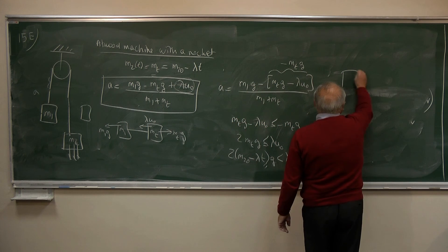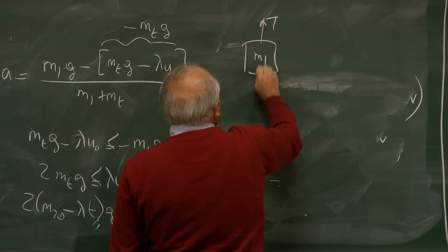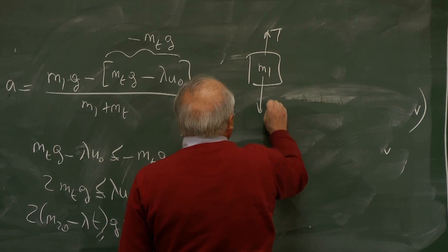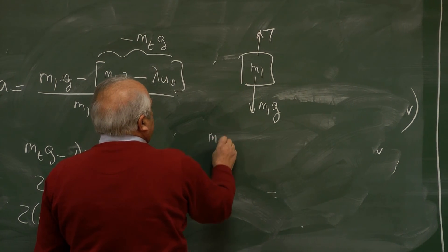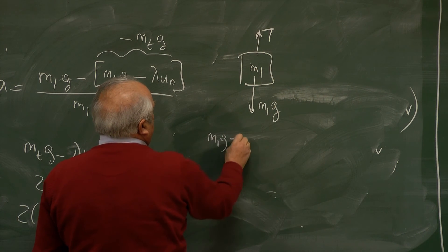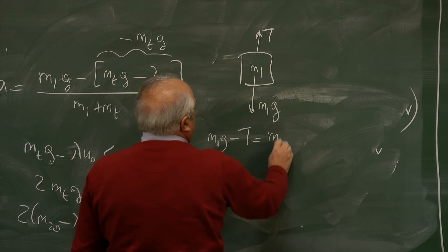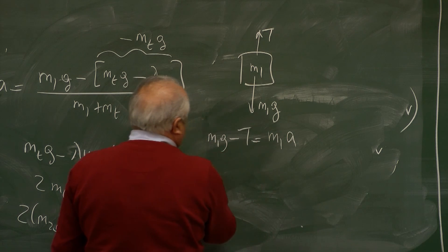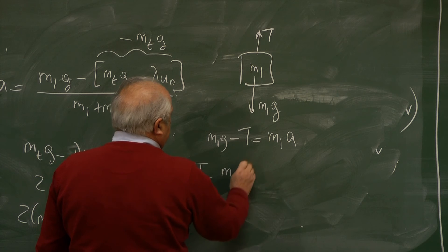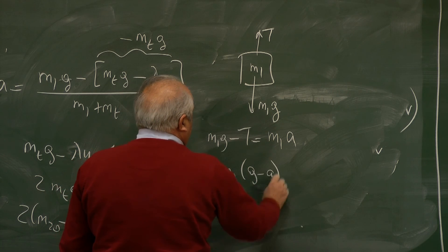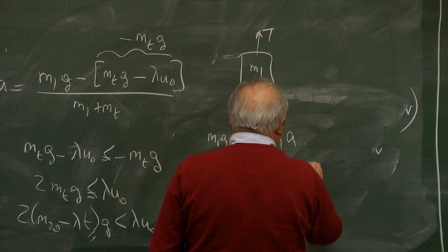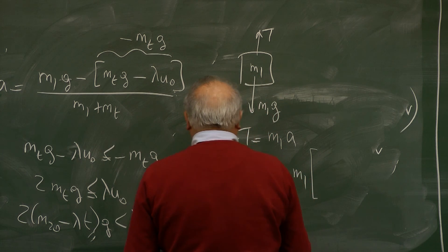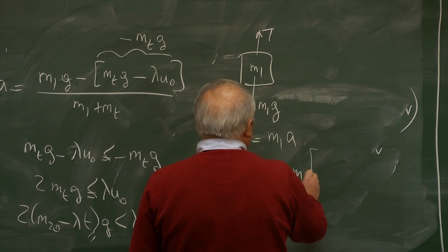Another way of looking at it is this. M1 tension, if I look at what is the tension in the rope, M1 G minus T is equal to M1 A. Therefore T is equal to M1 times G minus A.